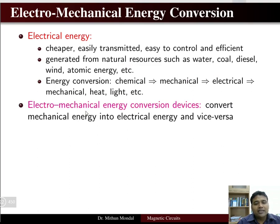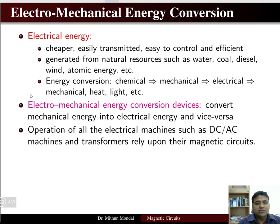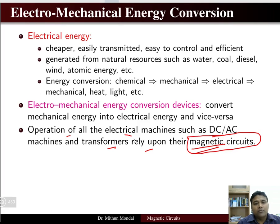Electromechanical energy conversion takes place between the mechanical and electrical field — to convert mechanical energy into electrical energy and vice versa. Either you convert mechanical energy to electrical energy or electrical energy to mechanical energy. This is the fundamental of electromechanical energy conversion devices. The operation of all electrical machines, whether DC or AC, and transformers rely upon the magnetic circuit. It is therefore very important to understand the magnetic circuit because the operation of any electromechanical machine depends upon it.